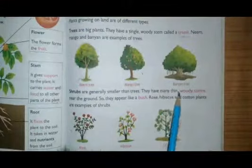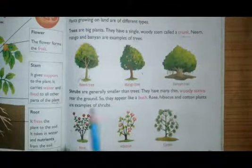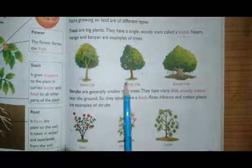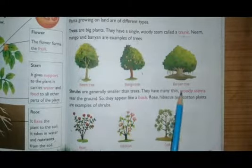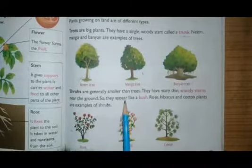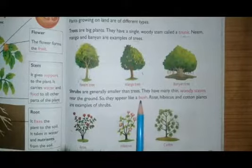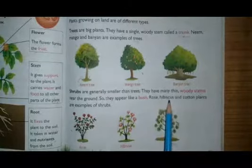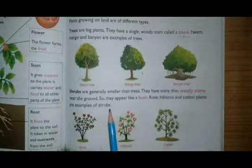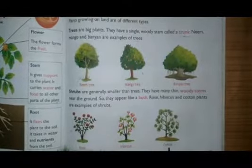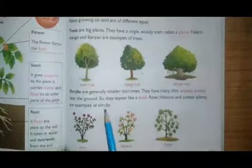Shrubs are generally smaller than trees. They have many small thin woody stems near the ground, so they appear like a bush. Rose, hibiscus, and cotton are examples of shrubs.